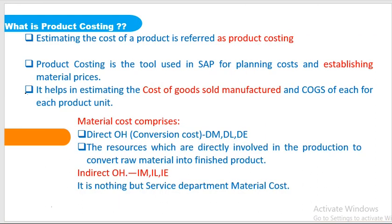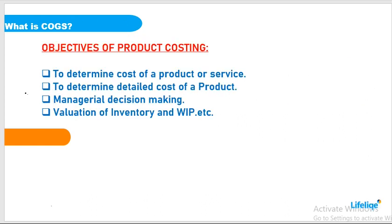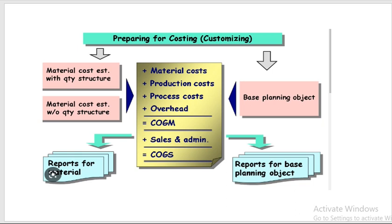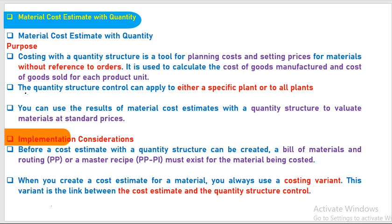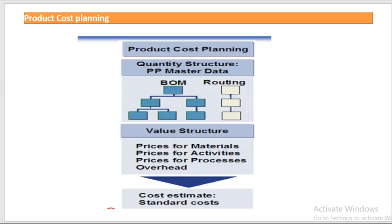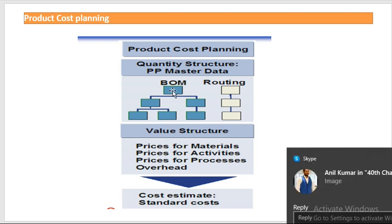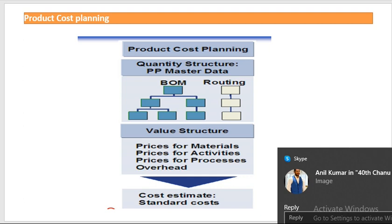So far we have discussed about what is Product Costing and objectives of Product Costing, and also explained about preparing for costing, Product Costing Integration, Material Cost Estimated with Quantity Structure, and Product Cost Planning. In Product Cost Planning, I already explained about BOM, and today's concept is Routing.